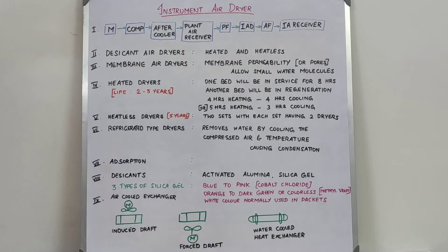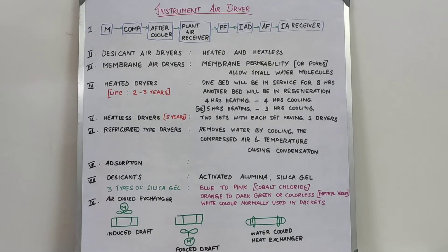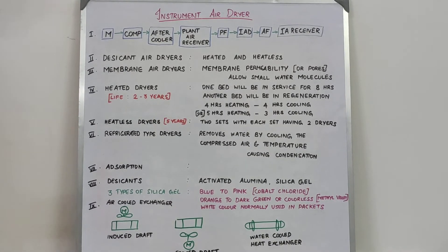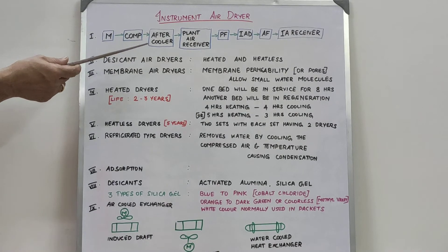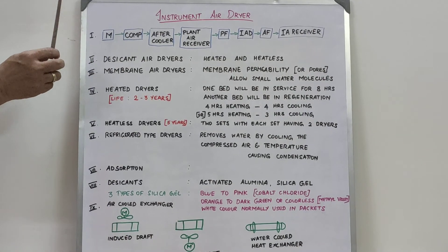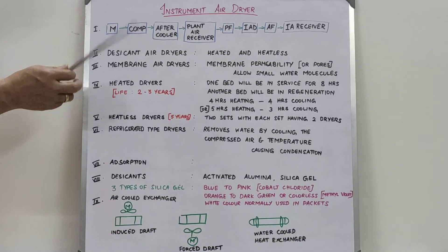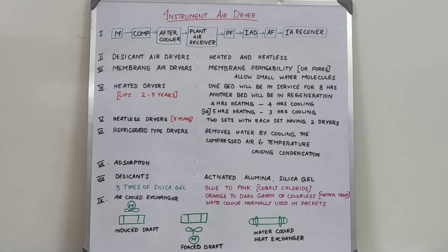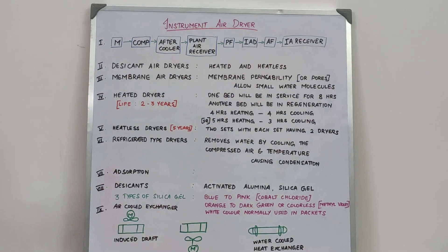The dew point achieved in the instrument air dryer is minus 40 degrees centigrade. Instrument air is used in all instruments to operate pneumatic valves, based on this principle. The instrument air dryer system is a vital unit in any plant or industry, whether it is a process industry, gas industry, refinery, or main utility plant. Hope you understand this process. We will see the next episode covering other cooling water systems. Thank you.